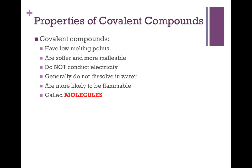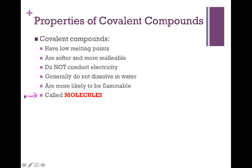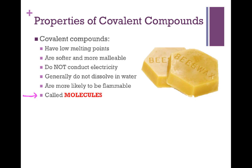Let's wrap up by talking about properties that covalent compounds tend to have, in contrast to the properties of ionic compounds. Covalent compounds tend to have significantly lower melting points, tend to be significantly softer and more malleable, and most do not conduct electricity. They also generally do not dissolve in water, and most covalent compounds tend to be flammable. We refer to covalent compounds as molecules, as opposed to ionic compounds which we call salts. A great example fitting all these categories is wax — it melts at low temperatures, is very soft, doesn't conduct electricity, doesn't dissolve in water, and is a fuel that burns in candles.